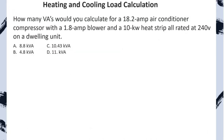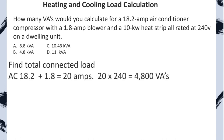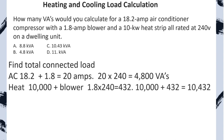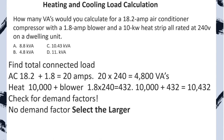Practice problem: How many VAs for an 18.2-amp air conditioner compressor with a 1.8-amp blower and a 10 KW heat strip, all rated 240V, on a dwelling unit? First, total connected load for AC: 18.2 plus 1.8 equals 20 amps, multiplied by 240V equals 4,800 VAs. For heat: 10,000 VA plus the blower motor (1.8 amps multiplied by 240V equals 432 VAs) for a total of 10,432. Check for demand factors: none. Select the larger of the two — the heat. We select C.